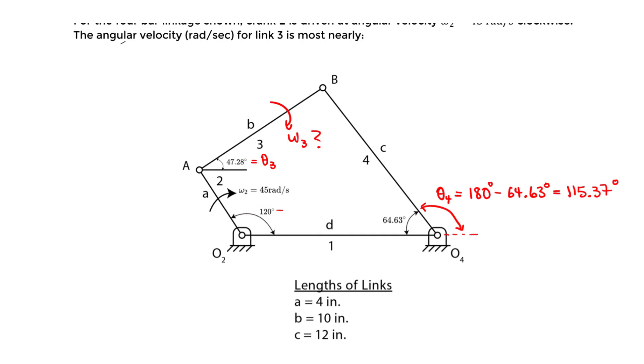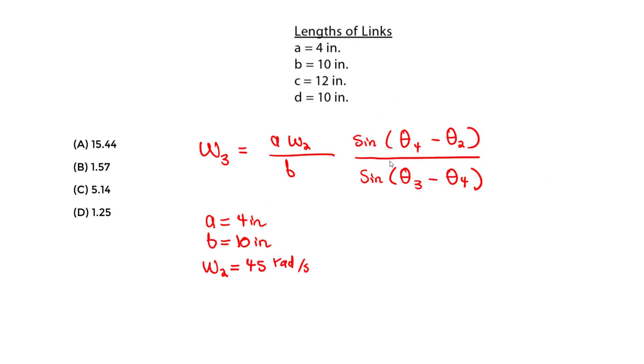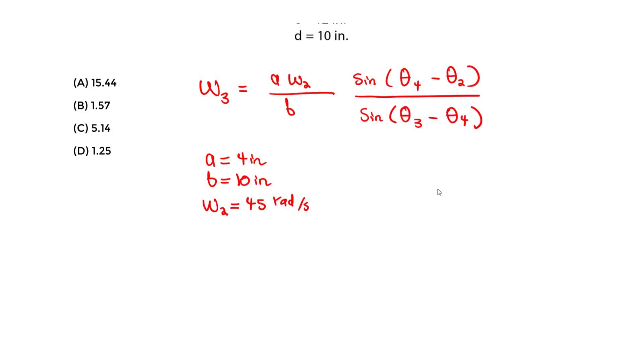But this angle is going to be what angle? It's angle theta_2. This is theta_2. So we have all the angles we need. All we do is plug it. So let me actually just write the angles: theta_4 is 115.37, theta_2—this should always be given if you have this type of example with the respective angular velocity—and we know theta_3 is 47.28 degrees.